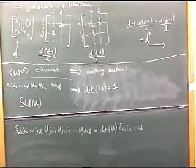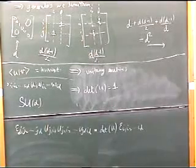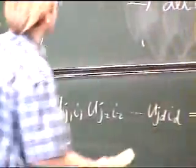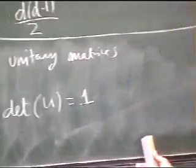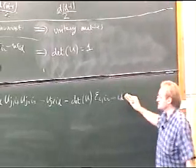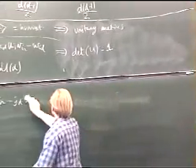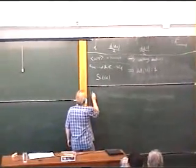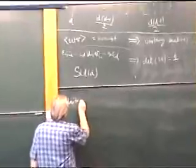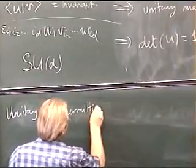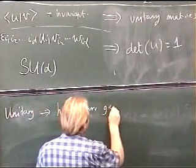So what are we going to do? We're going to do what we did for every single other example. We're going to ask ourselves what do the generators look like. Now, we've just argued that if these are going to be unitary matrices, that implies that our generators are Hermitian. So we're going to have Hermitian generators. Unitary implies Hermitian generators.